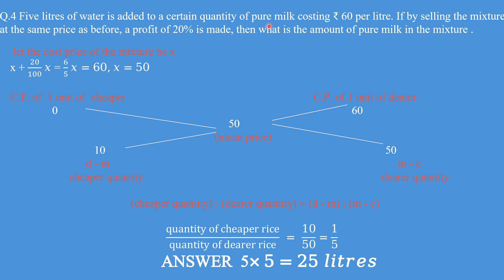Question 4: 5 liters of water is added to a certain quantity of pure milk costing 60 per liter. The expensive brand is milk costing 60, and the cheaper commodity is water, whose cost price is taken as 0. If by selling the mixture at the same price as before — meaning at 60 per liter — a profit of 20% is made, then what is the amount of pure milk in the mixture?